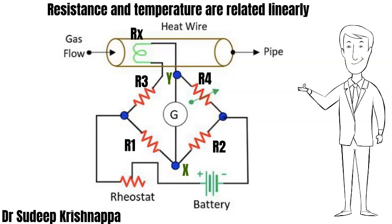When the bridge is balanced by altering R4 depending on the resistance of Rx, and gases flow over the heating element, they take away some of the heat, resulting in a drop in temperature. This alters Rx, changing the total resistance at position R3 and unbalancing the bridge. By altering R4, we can balance the bridge back again. The degree of alteration in R4 gives us the degree of change in resistance at Rx, which is linearly related to temperature, allowing us to measure the flow of gases.